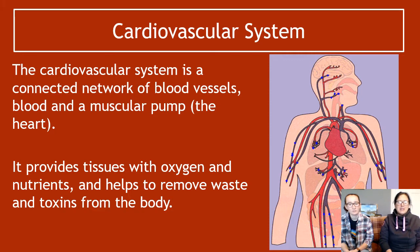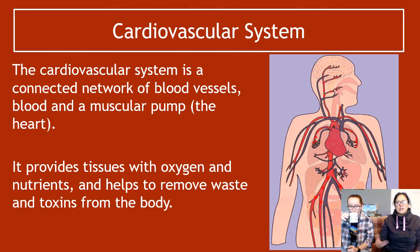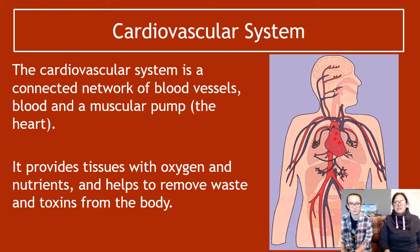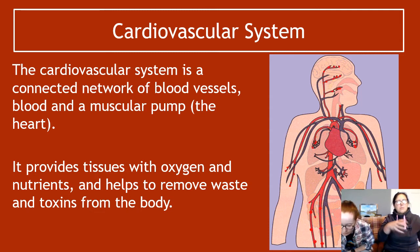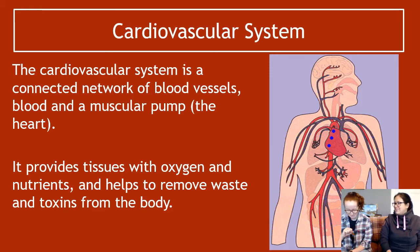The cardiovascular system is a connected network of blood vessels, blood and a muscular pump. Systems are organs and tissues that work together to do a particular job. Its job is to provide tissues with oxygen and nutrients and to remove waste and toxins from the body by carrying those things through the waste disposal organs. The lung removes CO2, the liver breaks down toxins, and the kidneys get rid of those broken down bits into urine.